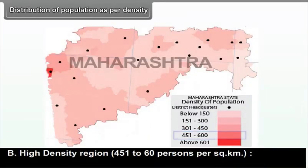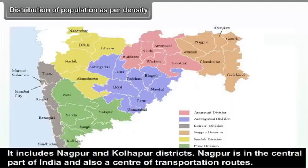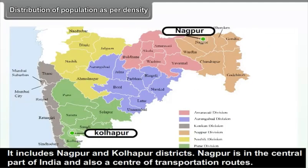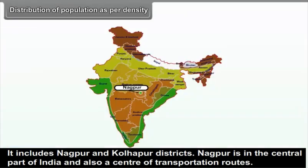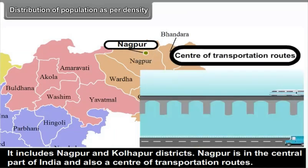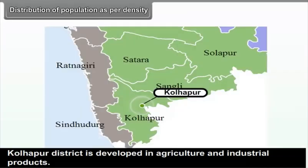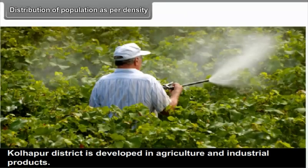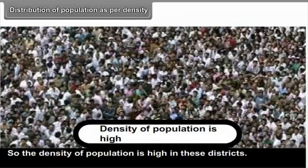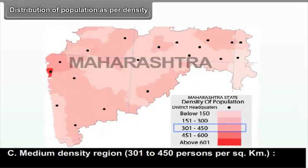(B) High Density Region — 451 to 600 persons per square kilometer: it includes Nagpur and Kolhapur districts. Nagpur is in the central part of India and a center of transportation routes. Kolhapur district is developed in agriculture and industrial products, so the density of population is high in these districts.